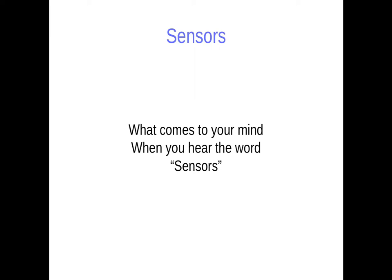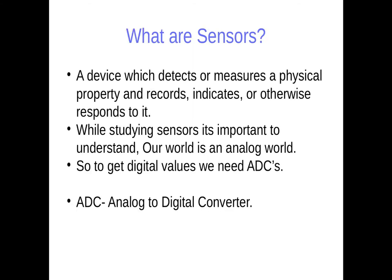So what basically are sensors? They are devices with which you can take some input from the outside world — you can interact with the outside world. With the help of sensors, you get to understand the changes happening in the outside world. Sensors basically sense the outside world and give you values, letting you understand if there is any change in the environment. In electronics, sensors are something that detects or measures a physical property and records, indicates, or otherwise responds to it.